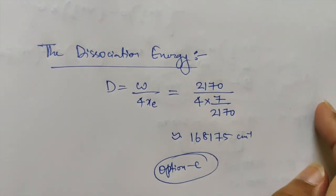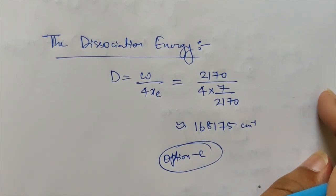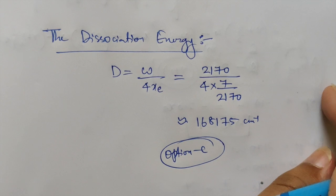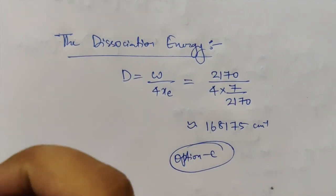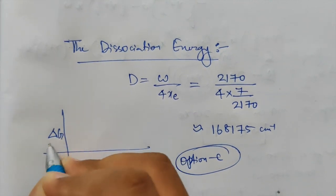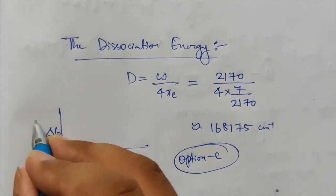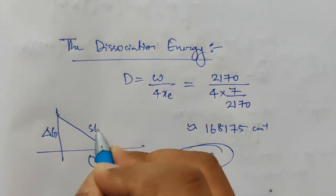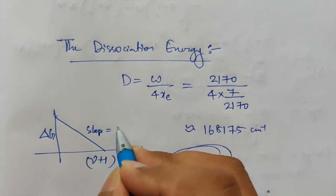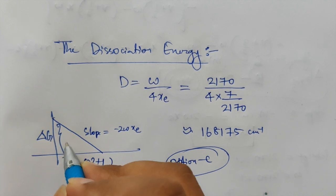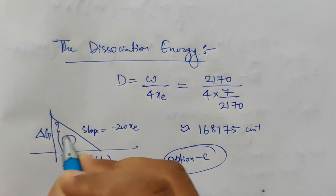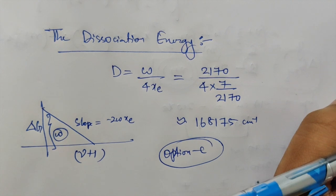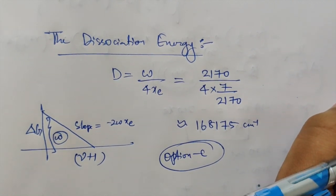That's how you solve the whole question — it was pretty simple. You just need to put the values in the given equation and that's how you can approach this question. For the graphical part: ΔG is on the Y-axis and (ν+1) is on the X-axis. Since the slope is negative you get a downward line, where slope = −2ωXe and the intercept equals ω. That's all for this video guys. I hope you understood and liked this video — let me know in the comments. Thank you so much for watching. Have a great day, bye-bye.